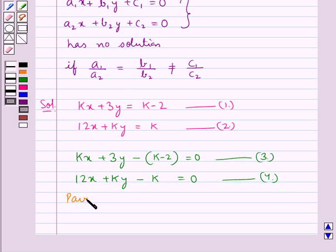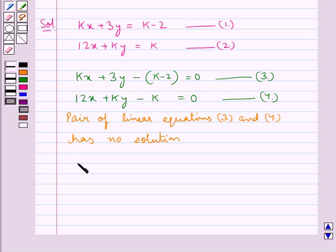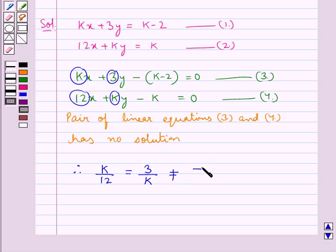Now, the pair of linear equations 3 and 4 has no solution. Therefore, using the condition stated in key idea, we have a1 upon a2 that is k upon 12 is equal to b1 upon b2 that is 3 upon k is not equal to c1 upon c2, which is minus of k minus 2 upon minus of k.